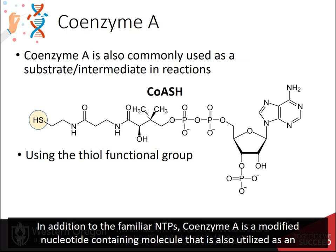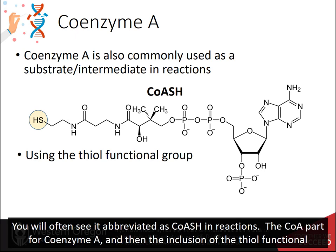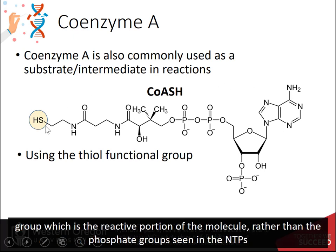In addition to the familiar NTPs, coenzyme A is a modified nucleotide-containing molecule that is also utilized as an intermediate and/or substrate in many reactions. The thiol functional group serves as the attachment point for these reactions. You will often see it abbreviated as CoASH in reactions — the CoA part for coenzyme A, and the inclusion of the thiol functional group SH, which is the reactive portion of the molecule rather than the phosphate group seen in the NTPs.